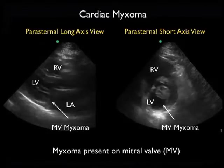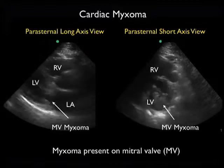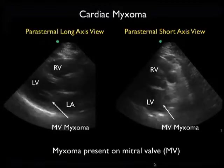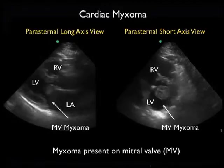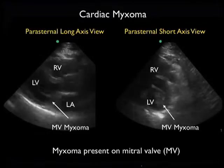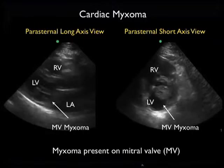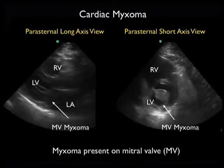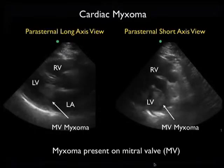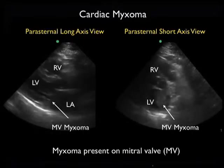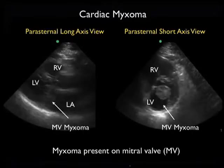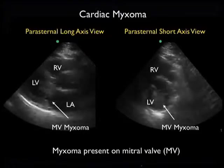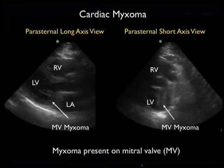Now let's take a closer look at the parasternal long axis view. We note the left atrium appears dilated in size, and in fact, on formal cardiology echocardiography, this patient was found to have severe mitral valve regurgitation resulting in a dilated left atrium.